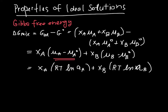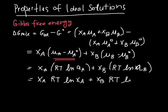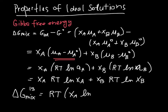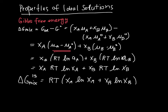In an ideal solution, the activity is just equal to the composition, so we plug that in and get XA·RT ln(XA) plus XB·RT ln(XB). Factoring out RT, we end up with delta G mixing for an ideal solution equal to RT times (XA ln XA plus XB ln XB). We will use this expression again and again.